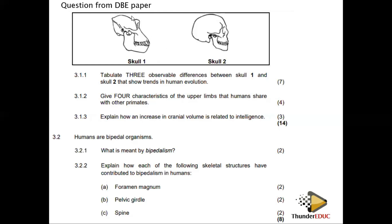Number two: sloping face versus flat face — one skull has a sloping face, the other has a flat face. The canines in one skull are well developed, while the canines in the other are less developed. In one skull the jaws are protruding outward, while in the other skull the jaws are not protruding.